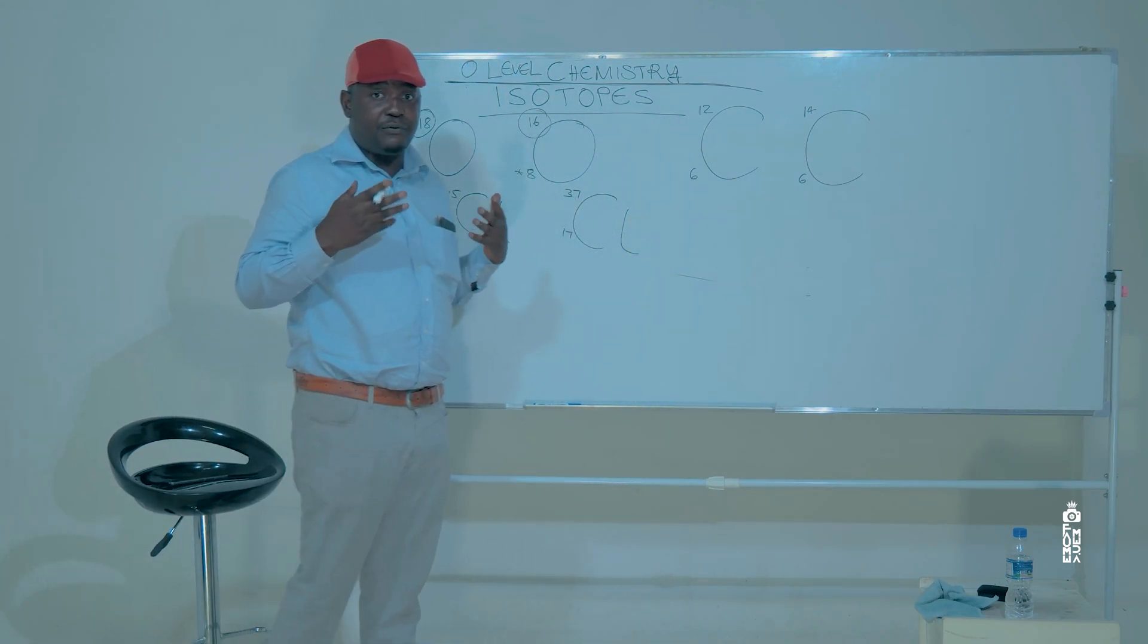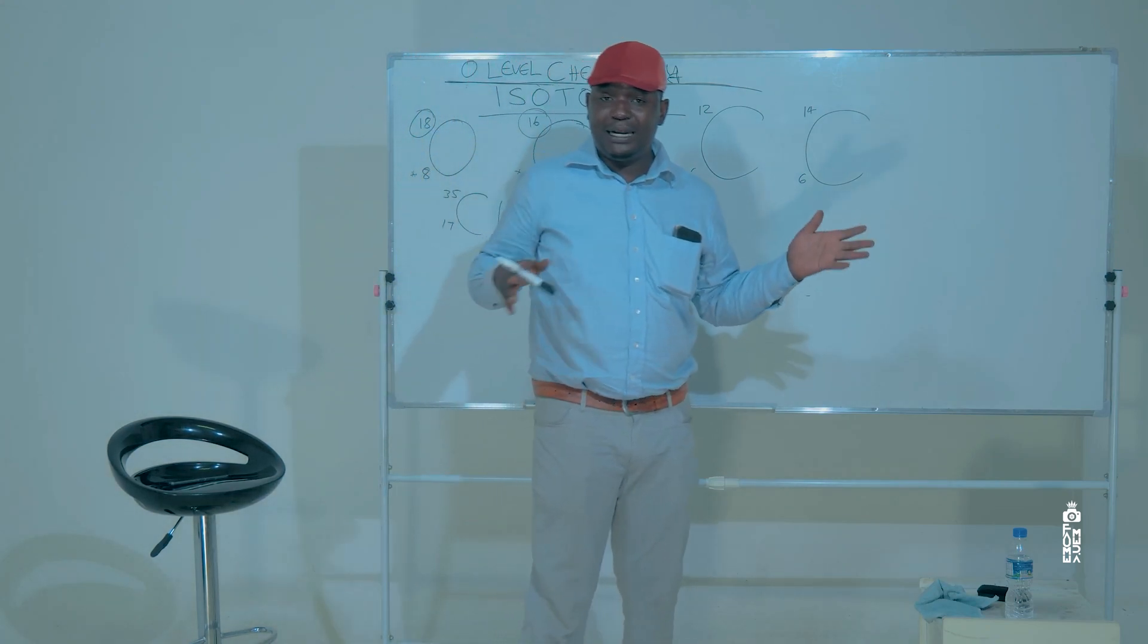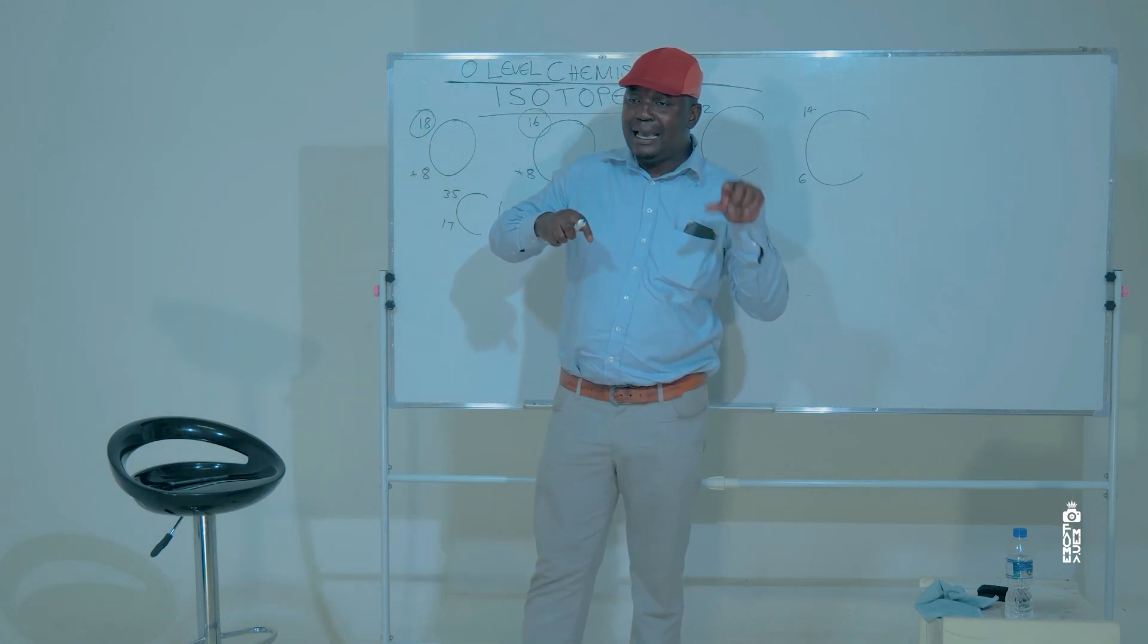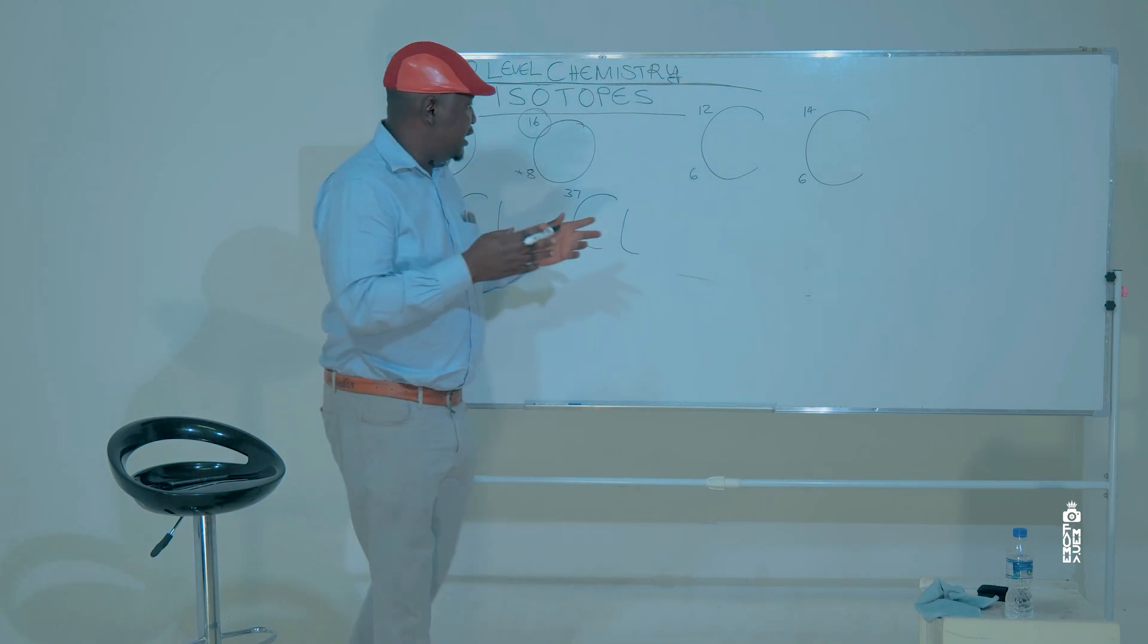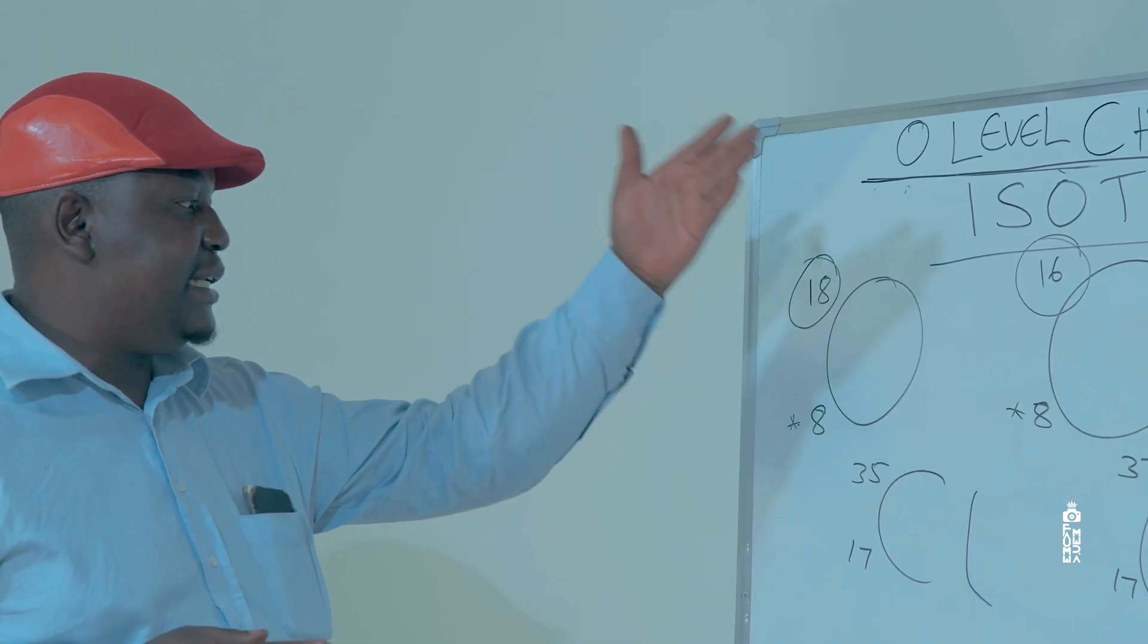The only difference is the number of neutrons, which will subsequently result in the differences in the masses. So, we have oxygen 16,8, oxygen 18,8.